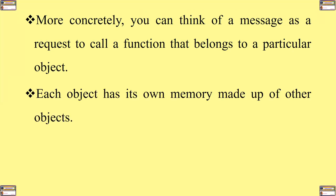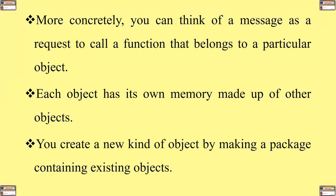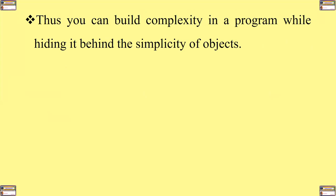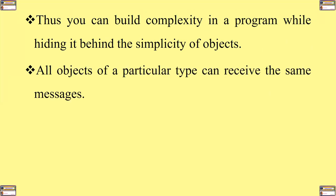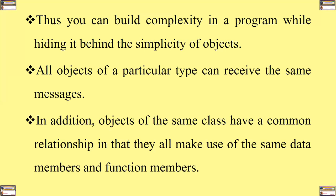Each object has its own memory that is made up of other objects. You create a new kind of object by making a package containing existing objects. Therefore, you can build complexity in a program while hiding it behind a simplicity of objects. All objects of a particular type can receive the same messages.